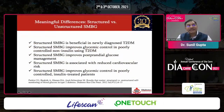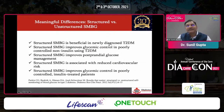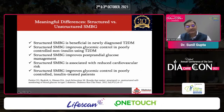What is the difference between structured versus unstructured self-monitoring of blood glucose? Structured SMBG is beneficial in newly diagnosed type 2 diabetes, improves glycemic control in poorly controlled diabetes especially type 2, improves postprandial glycemic control, is associated with reduced cardiovascular risk, and improves glycemic control with better HbA1c. There is good data that with the same dose of medicine, simply monitoring can result in reduction in HbA1c.